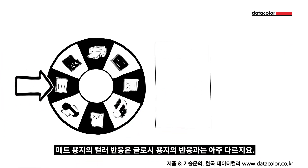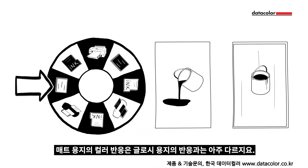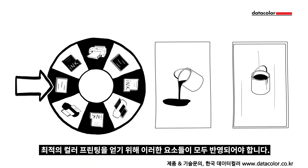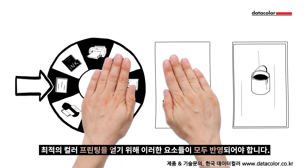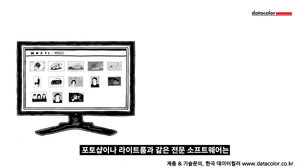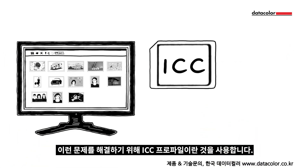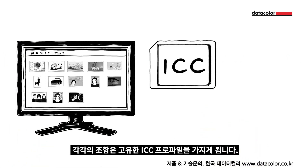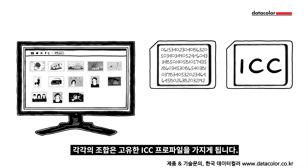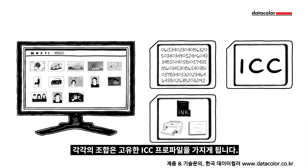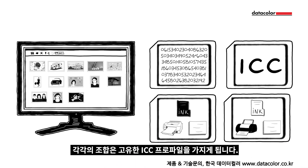Matte paper reacts differently to glossy paper, and the amount of ink used varies. For optimal colour results from a printer, these factors need to be coordinated. Professional software like Photoshop or Lightroom uses a system called ICC profiling to handle this. An ICC profile stores complex information about the combination of printer, paper and ink. Every combination has its own ICC profile.